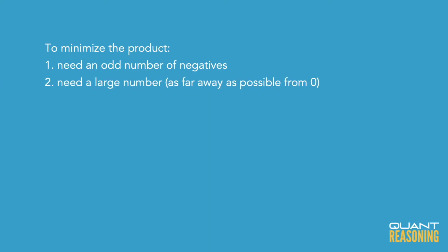We want the product to land as far away from zero on the left side as possible. The way to do that is to take numbers that are as far away from zero as possible, so we would take a bunch of negative tens and positive tens. Just make sure that we have an odd number of negative tens.